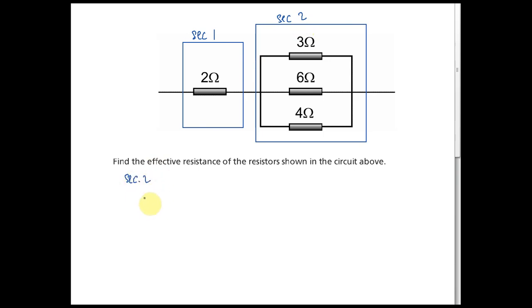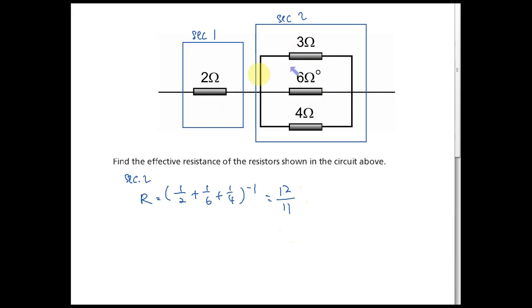Section two is a parallel circuit, so the resistance equals the reciprocal of (1/2 + 1/6 + 1/4). Using a calculator, this gives 12/11 ohm.